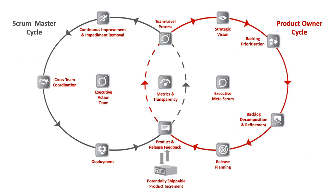Scrum of Scrums Master (SOSM): the Scrum Master of the Scrum of Scrums is called the Scrum of Scrums Master (SOSM). The SOSM is accountable for the release of the joint team's effort and must make progress visible, make an impediment backlog visible to the organization, remove impediments that the team cannot address themselves, facilitate prioritization of impediments with particular attention to cross-team dependencies and distribution of backlog, improve the efficacy of the Scrum of Scrums, work closely with the Product Owner Team to deploy a potentially releasable product increment at least every sprint, and coordinate the team's deployment with the Product Owner's release plans.